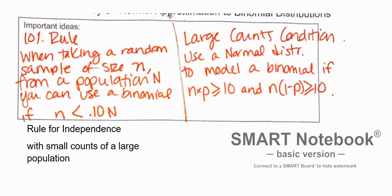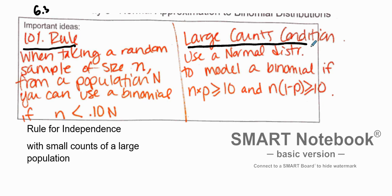We're going to go through Unit 6.3, talking about serious important ideas — the 10% rule and the large counts condition. This is when you have a binomial setting.